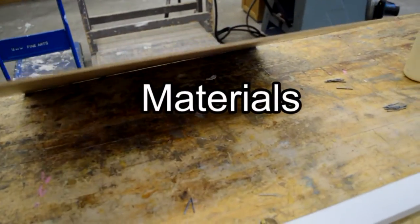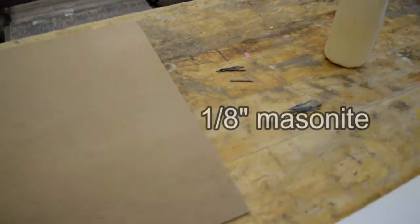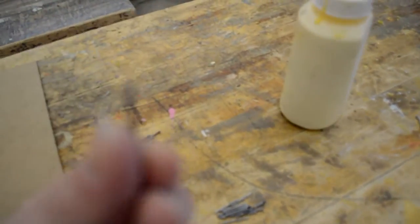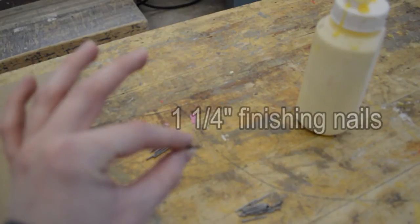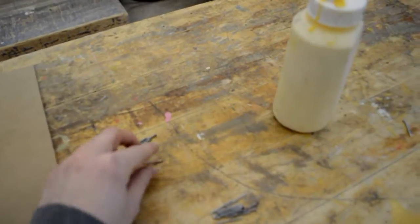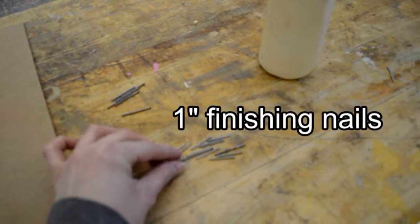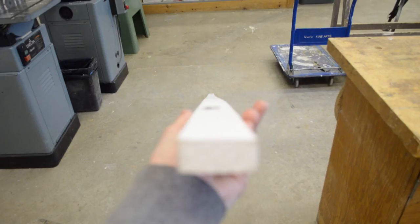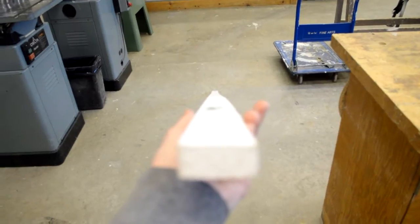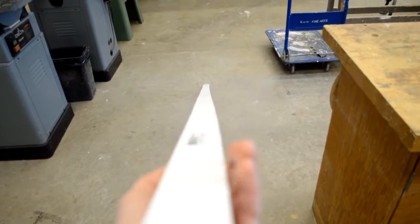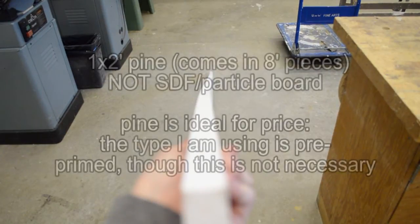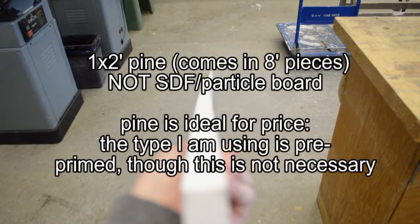For this project I'm using eighth inch masonite that you can use up to quarter inch depending on how large of a panel you'd like to make. I'm using one inch finishing nails to go around the edges and one and a quarter inch nails to make the frame. You'll need wood glue to attach the frame to the masonite and you'll need your one by two inch wood. Just make sure when you pick your pieces out that they are as little warped as possible by holding them out in front of you and checking how much they bend on both sides. Pine is the best because it's normally the cheapest but you can use any wood as long as it's not SDF.